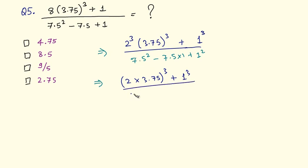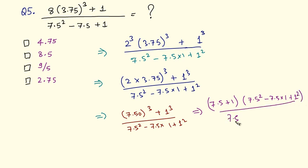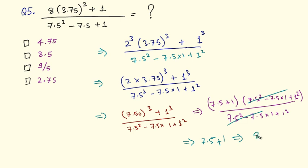Now using the formula a cubed plus b cubed equals a plus b times a squared minus ab plus b squared, the numerator is 7.5 cubed plus 1 cubed, which expands to 7.5 plus 1 times 7.5 squared minus 7.5 into 1 plus 1 squared. The denominator is 7.5 squared minus 7.5 into 1 plus 1 squared. These cancel out, leaving 7.5 plus 1, which equals 8.5.